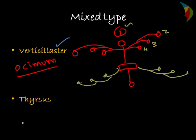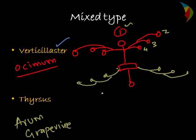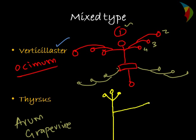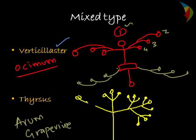The last type of inflorescence is the thyrsus type. The common examples are Arum or grapevine. It is a mixed type of inflorescence where you have the main stock in between, with the main flower, and then additional flowers coming laterally. A typical triflower type of structure is present. So this is the thyrsus type of inflorescence.